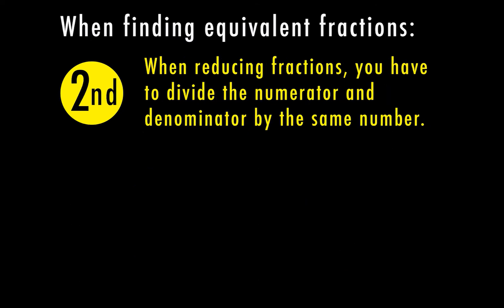For step 2, when we're reducing fractions, you have to divide the numerator and the denominator by the same number. Reducing fractions is how we get them to their simplest form. Here I have 12 over 15 and I want to reduce it. 12 does not go into 15 equally, so let's look at the other factors of 12: 1 times 12, 2 times 6, and 3 times 4. Of those factors, the only number that also goes into 15 is 3. So I divide the numerator by 3 and the denominator by 3 — 12 divided by 3 and 15 divided by 3 gives me 4 fifths.